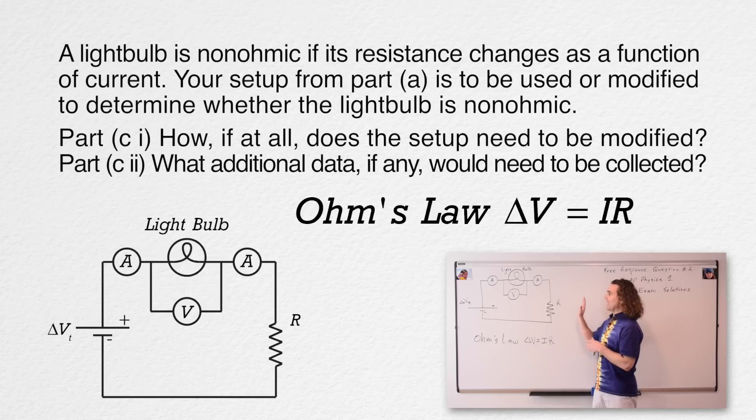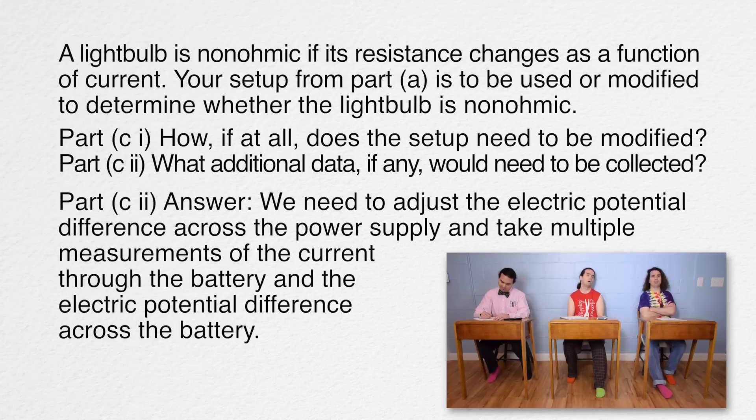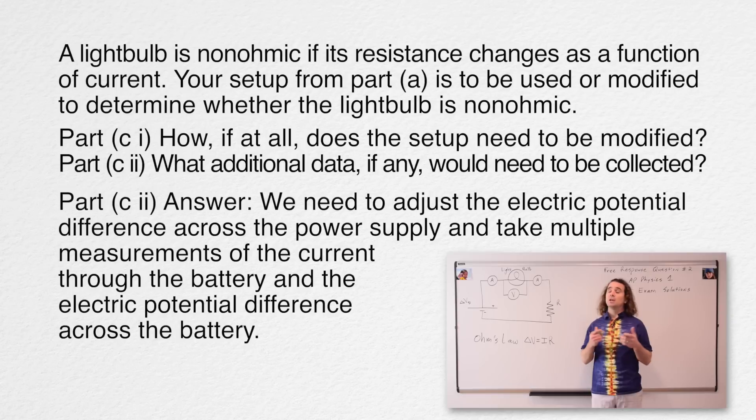And it turns out we actually don't need to make any changes to our circuit in order to determine whether the light bulb is ohmic or non-ohmic. What about part C(ii), Bo? Do we need any additional data? Actually, we do need additional data. We need more data points. So, we can say, we need to adjust the electric potential difference across the power supply and take multiple measurements of the current through the battery and the electric potential difference across the battery.